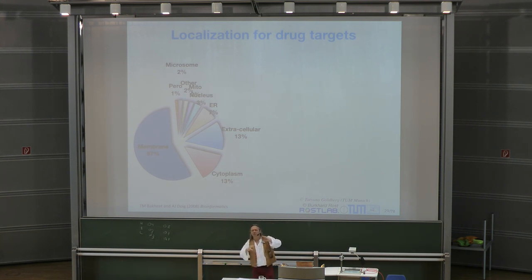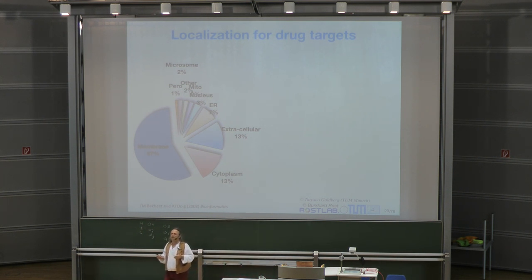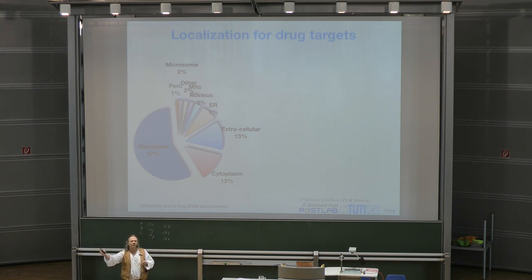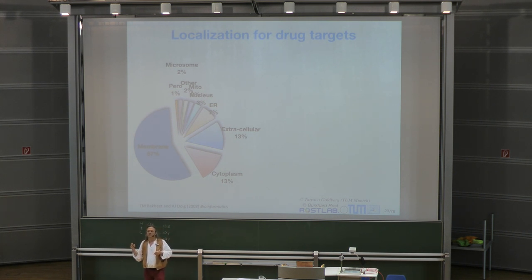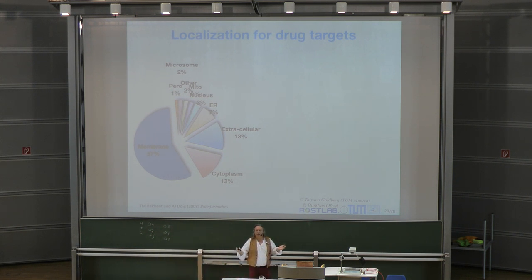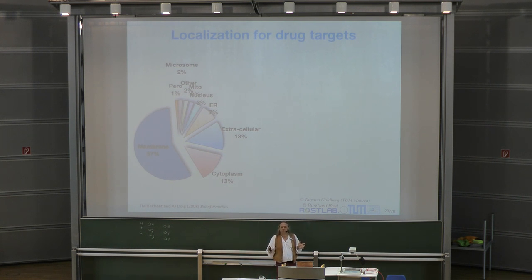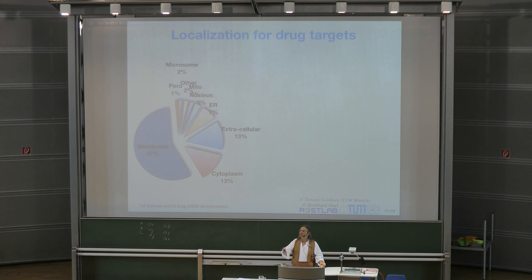Just putting concrete around the cell wouldn't work. You need resources from the environment, and you have to get rid of garbage — exactly like a medieval town with a wall around it. Cells have the same problems: you need to get stuff in to survive, and you need to get waste out.